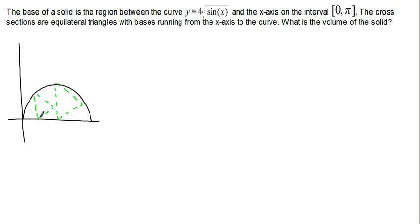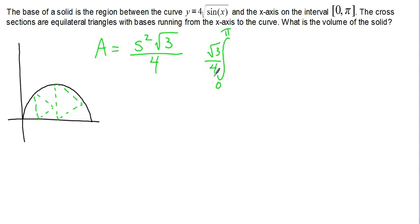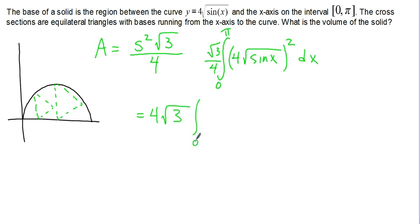The formula for the area of an equilateral triangle is the side squared times root 3 divided by 4. That's a good handy one to have memorized. So we're going to integrate, once again, from 0 to pi, and we can pull our root 3 over 4 out to the front, times our side length (4 root sine X) squared DX. Again, squaring 4 root sine X gives us 16 sine X. We pull the 16 out to the front, giving us 16 root 3 over 4, or just 4 root 3 times the integral from 0 to pi of sine X DX.